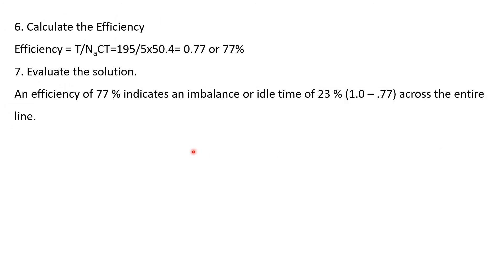Step 6: calculate the efficiency. Efficiency equals the sum of task times divided by the actual number of workstations times the cycle time. That is 195 divided by 5 times 50.4, which equals 0.77 or 77% efficiency. An efficiency of 77% indicates an imbalance, meaning 100 minus 77 equals 23% idle time across the entire line. This concludes our discussion — thank you for listening.